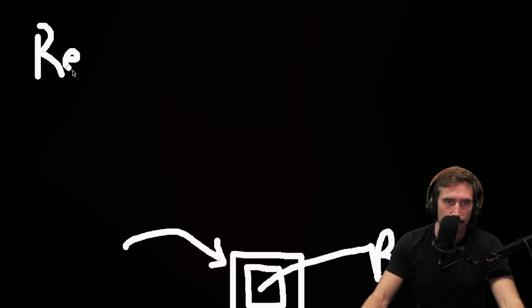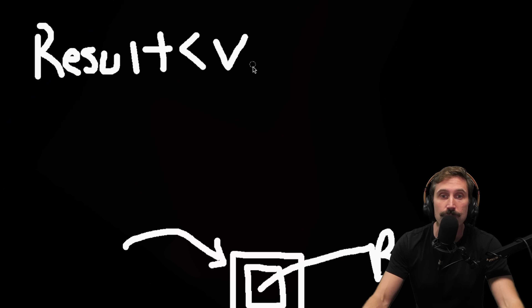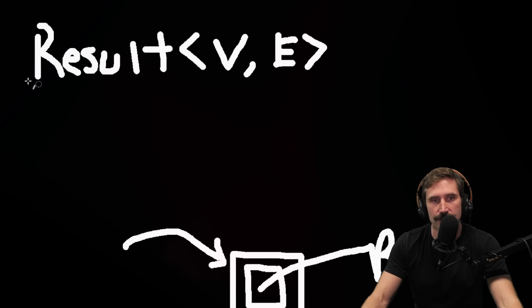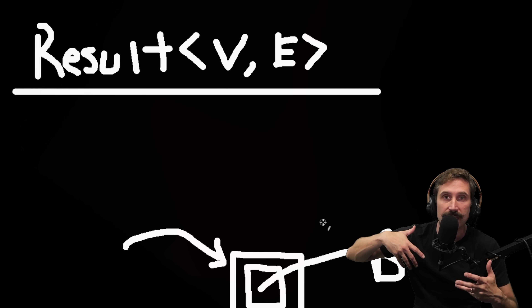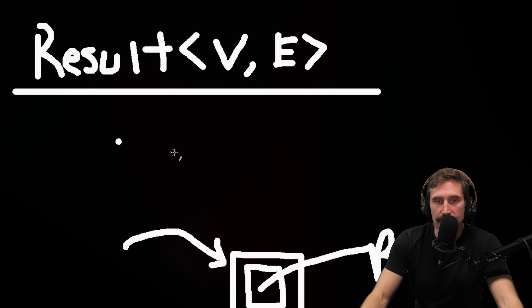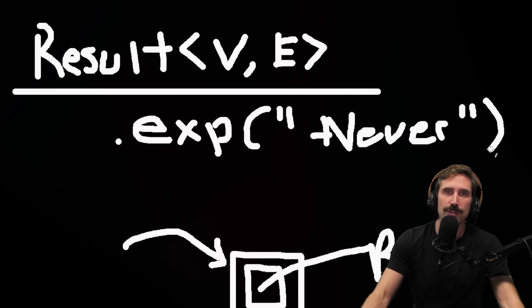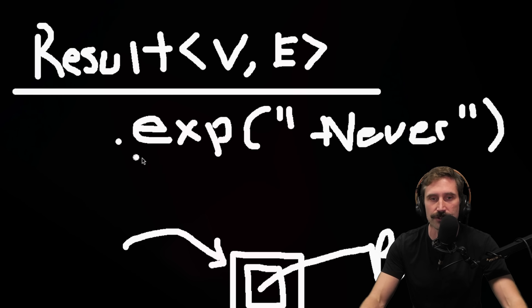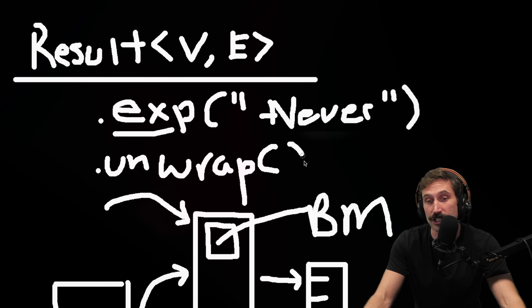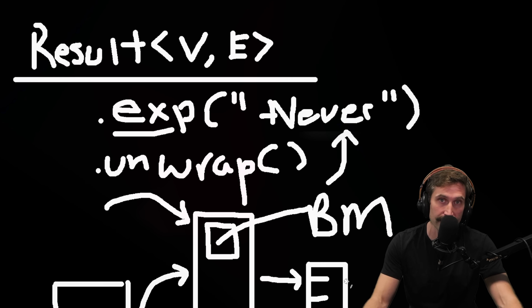In Rust, there are things called result objects. A result object is effectively either a value or an error — there is no try/catch in Rust. You get back something that is either an error or a value. If you know it should always be a value, people often use something called expect, where you pass in a string saying 'this should never fail.' You can also use unwrap, which is identical to expect except it doesn't include that message and just gives you the generic failure message. There were arguments all across Twitter, but it was actually a real large system constraint and cascading failure that ultimately led to Cloudflare crashing.